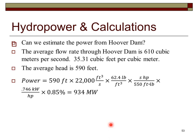To estimate the power of Hoover Dam: the average flow rate is 610 cubic meters per second (approximately 22,000 cubic feet per second) and the average head is 590 feet. Multiplying 590 ft × 22,000 ft³/s × 62.4 lb/ft³, dividing by 550 ft·lb/s per horsepower, multiplying by 0.746 kW per horsepower, and applying 85% efficiency gives approximately 934 megawatts.